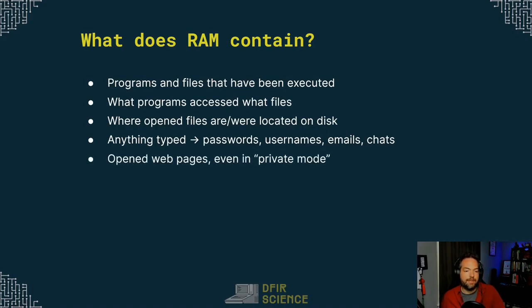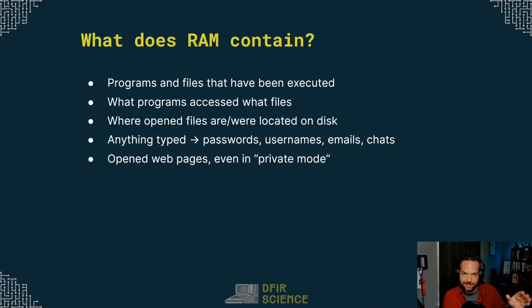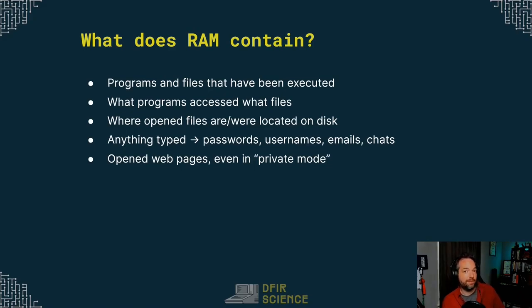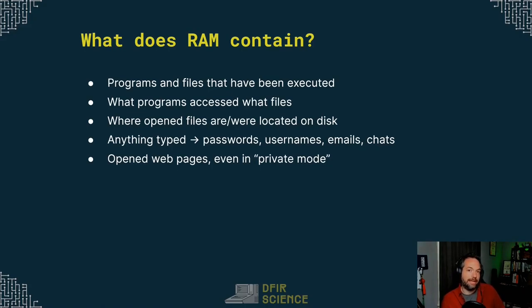Open web pages, even in private mode. Private mode for most browsers attempts to not write anything to the hard drive, so instead it just loads everything into RAM. Whenever you're done with private mode, it essentially erases it — but it's not completely erased. So whenever you're doing something in private mode, all of the activities you're doing are still loaded into memory. If you weren't loading things into memory, private mode just wouldn't work because you couldn't see anything on your screen. So open web pages, even in private mode, even if you're using something like Tor Browser with onion URLs — you can potentially recover all of that and even rebuild web pages just from what's resident in memory.